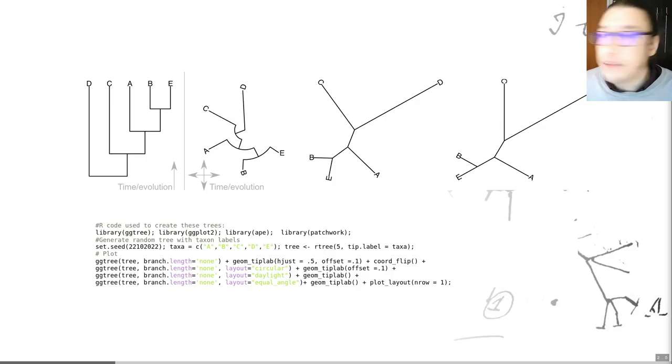And what this is telling us is exactly the same, but we can think about it in a more abstract way. If we look on the left-hand side here, we can see that B and E share a common ancestor to the exclusion of A, but A, B, and E share a common ancestor to the exclusion of C. That's what this phylogenetic hypothesis that is implied by this phylogeny is essentially stating.